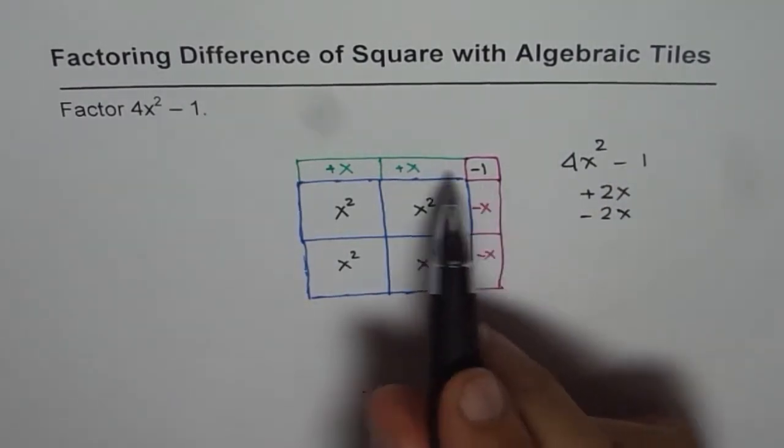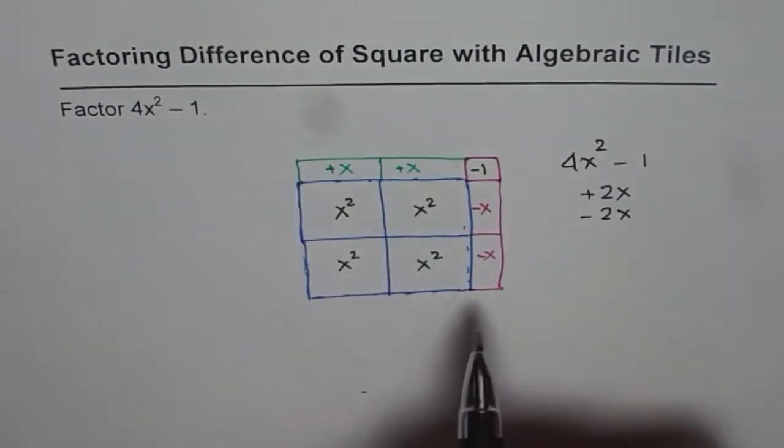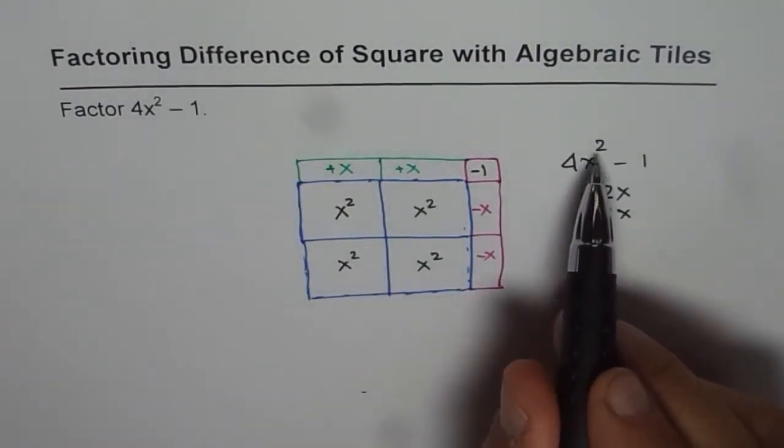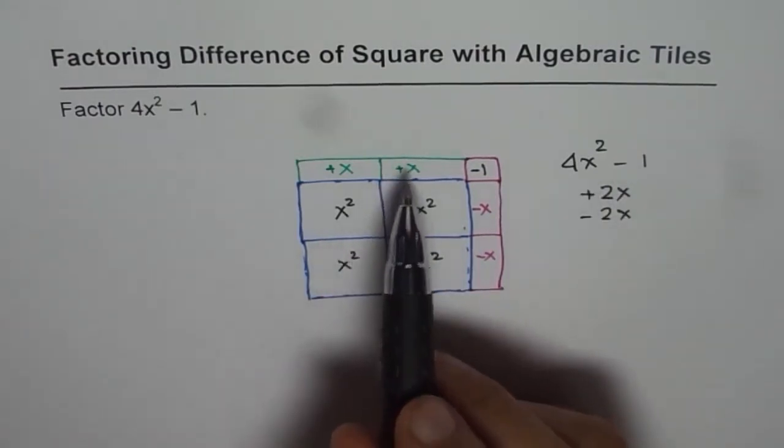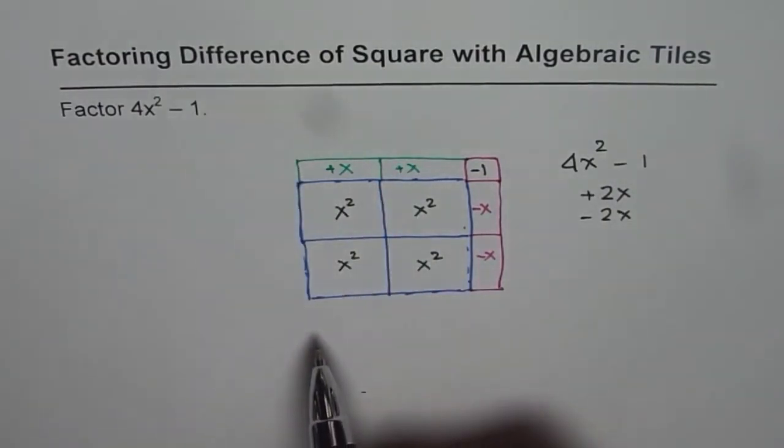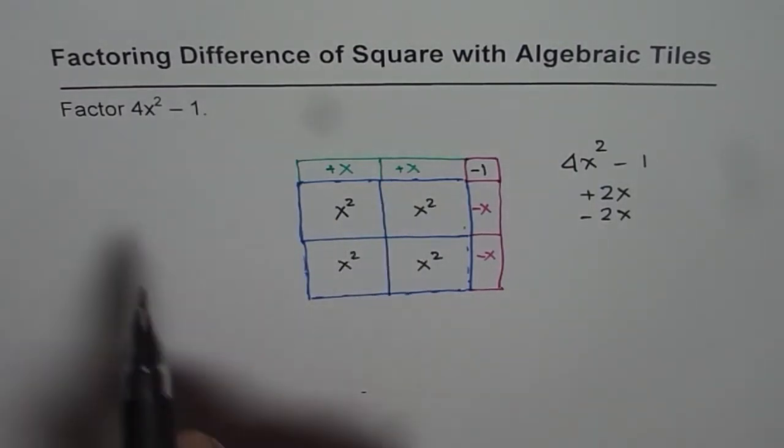Now the dimensions of this rectangle when multiplied give you the area, and those dimensions are the factors of 4x² minus 1. So the dimensions are 2x minus 1 and 2x plus 1.